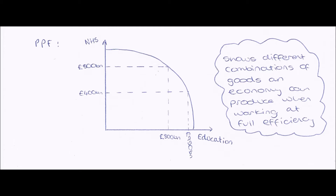Firstly, a PPF. A PPF shows the different combinations of goods — in this case our spending on the NHS and our spending on education. It shows the different combinations of goods an economy can produce when it is working at full efficiency. So if I'm spending 800 billion pounds on the NHS and working at full efficiency, I can read across to the curve and find that I'm also spending 800 billion pounds on education.